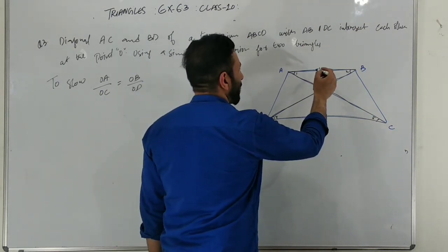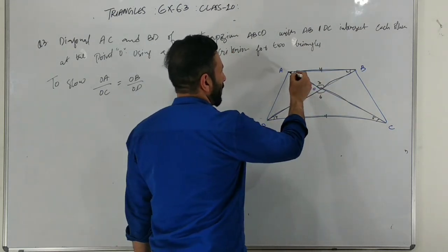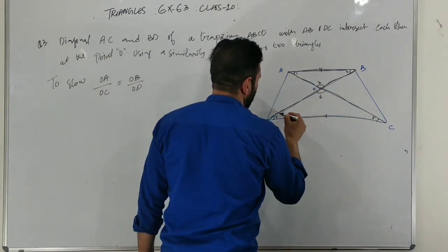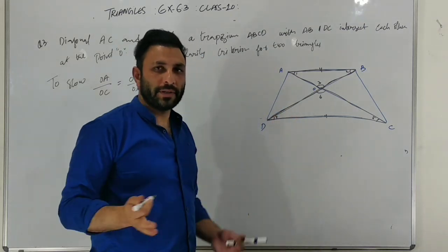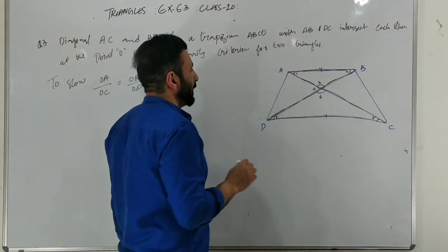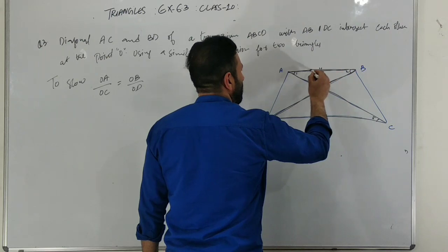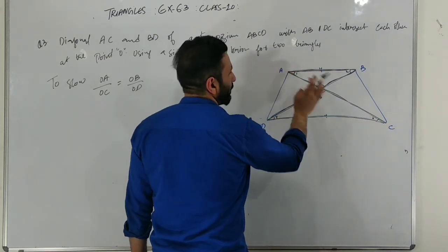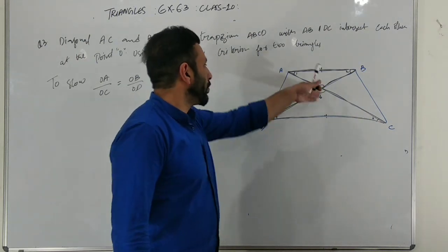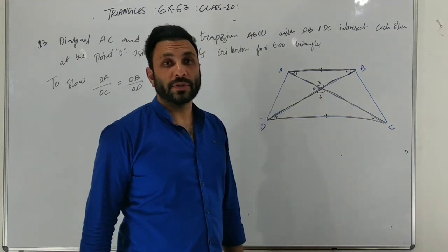Two lines are parallel, AB parallel to CD. So angle 2 is equal to angle 4, alternate interior angles. Angle 1 is equal to angle 5, alternate interior angles. And angle 3 is equal to angle 6, vertically opposite angles.